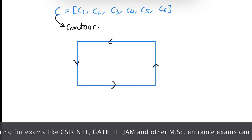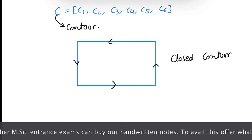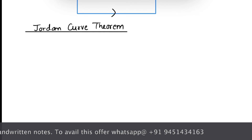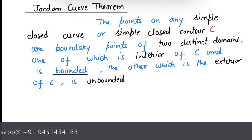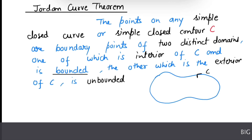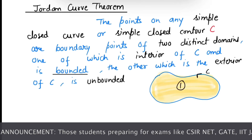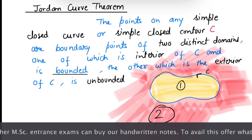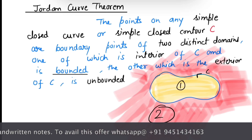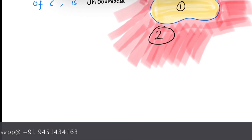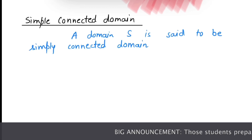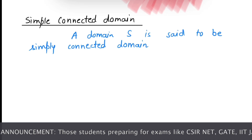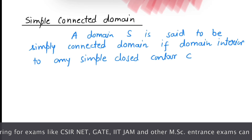This is an example of a closed contour. Now see a theorem known as the Jordan curve theorem. Its statement is very obvious: suppose we have a simple closed curve C; then the points on this curve are boundary points of two distinct domains — first, the interior of curve C, which is bounded, and second, the exterior of curve C, which is unbounded. Now let's end this section with the definition of simply connected domain. A domain S is said to be simply connected if the interior of any simple closed contour C lies wholly inside S.